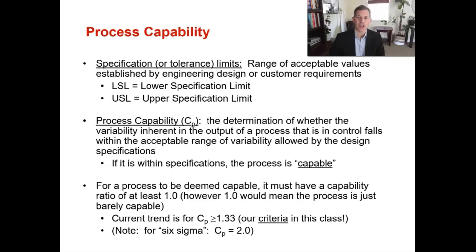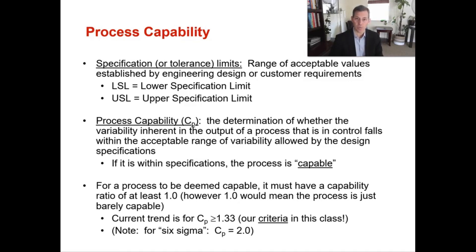We're going to conclude the supplement to chapter 6 on statistical process control, talking about process capability. Process capability is the natural variation in a process that results from common causes. When we look at process capability, we're really looking at two main factors: the specification or tolerance limits, and the process capability itself. The LSL is the lower specification limit and the USL is the upper specification limit — the range of acceptable values established by engineering design or customer requirements.